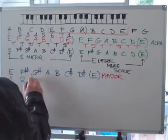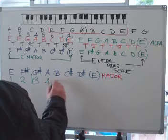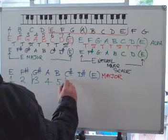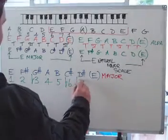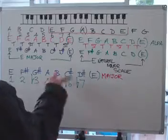And then use this formula: one, two, flatten the third, four, five, flatten the sixth, flatten the seventh. This is the quickest way.